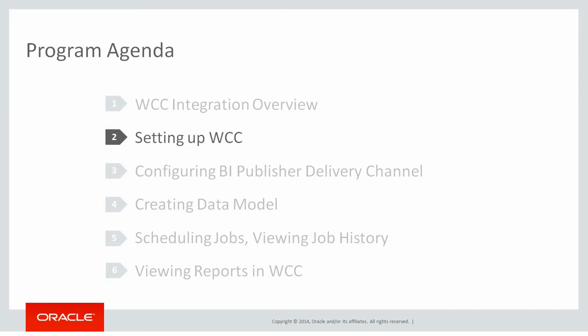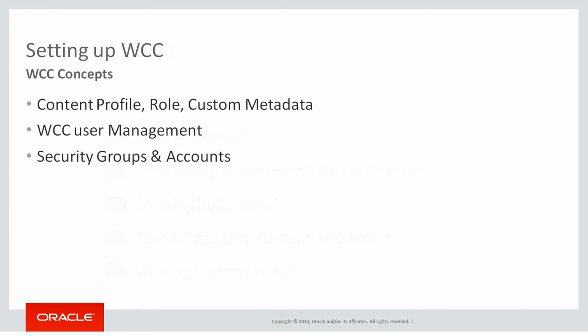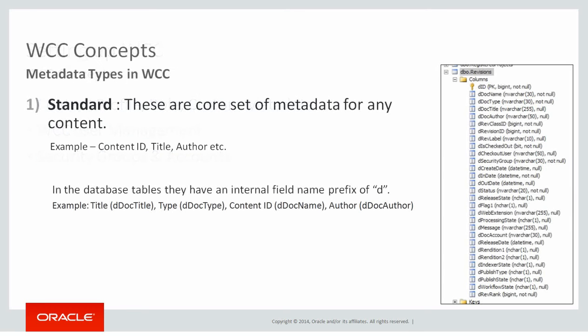Now we'll look into the setting up of WCC. Metadata is the underlying definition or description about data — for WCC, it's about documents. Metadata in WCC are the document attributes such as content ID, author, etc. There are two types of metadata: standard and custom.